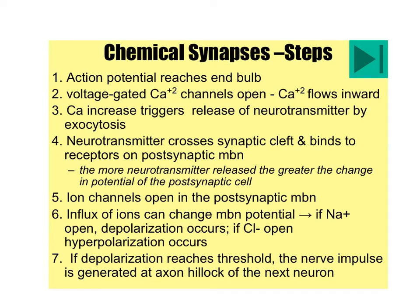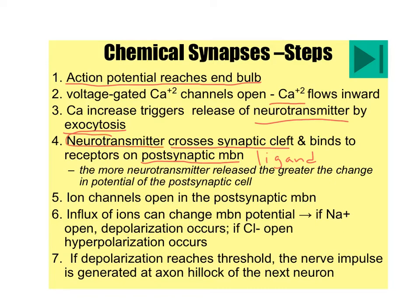Here are the steps of what happens at the chemical synapse. First, the action potential reaches the synaptic end bulbs, causing calcium channels to open and calcium to come in. That causes neurotransmitters to be released through exocytosis into the synapse. Those neurotransmitters cross the synaptic cleft and bind to the ligand-gated receptors on the postsynaptic membrane. The neurotransmitter keys fit into the protein, allowing it to open and sodium to begin rushing into the cell, depolarizing the neuron from negative 70 toward a more positive value.